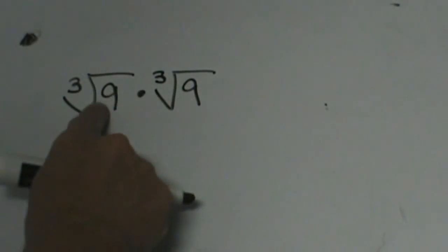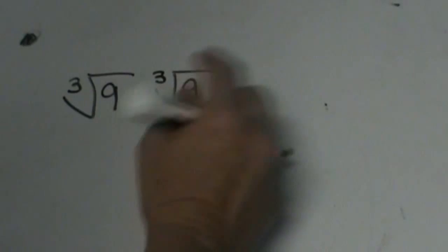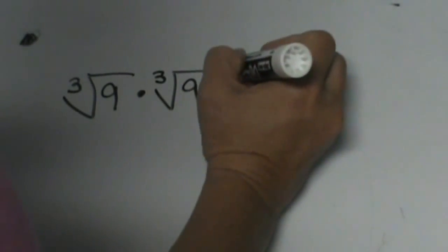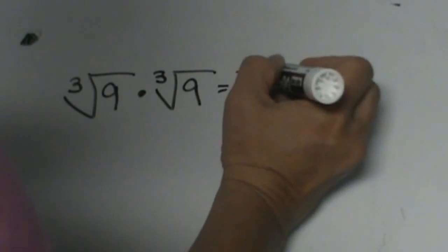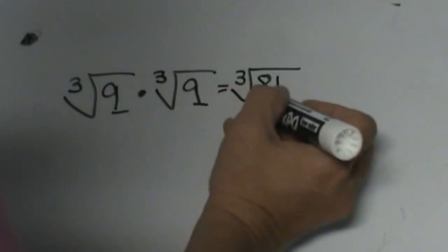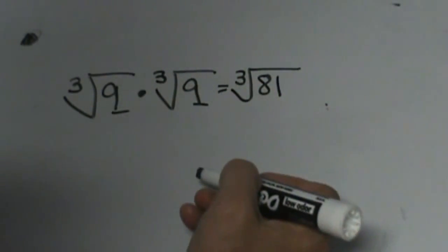Well, we have the same root, so I can go ahead and multiply the 9 and the 9 together. I get the cube root of 81 because 9 times 9 is 81, so you are going to multiply the bases together.